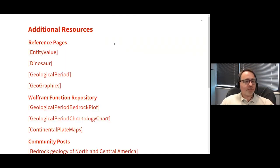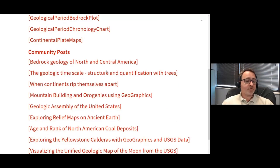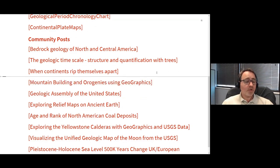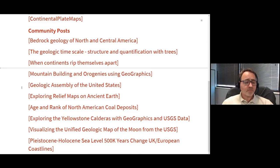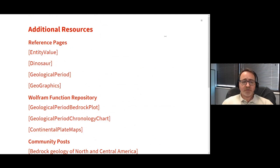I've got some additional resources you might want to check out. Some links to ref pages for tools that are useful: entity value, dinosaur entity type, geological period, and geographics. Several Wolfram function repository items I've used throughout this presentation, and some additional ones as well. Some community posts all related to this type of thing, including posts about mountain building or orogenies. I encourage anyone interested in this to check that out. That should be about all of my presentation. If anybody has any questions, I would be happy to field those.